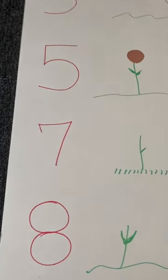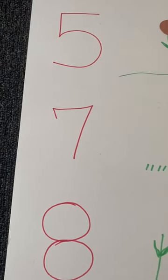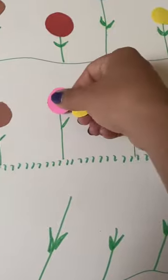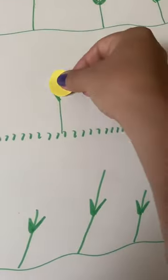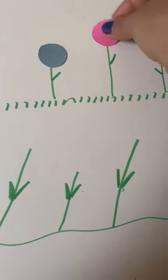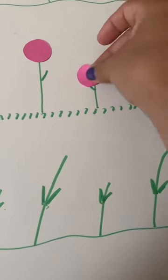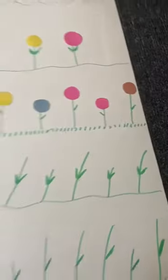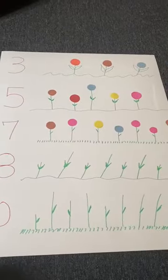Let's do the next one. What's the next number? Seven! So we're gonna count seven flowers. You ready? One, two, three, four, five, six, and seven. Look at my flower garden!